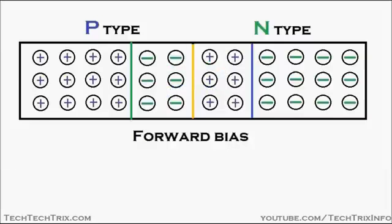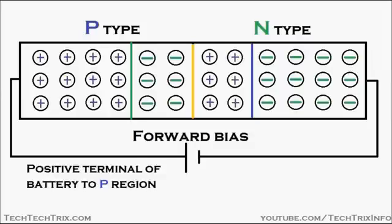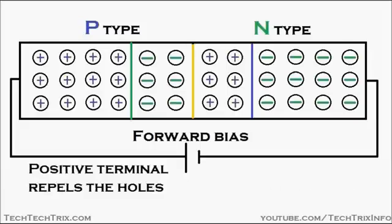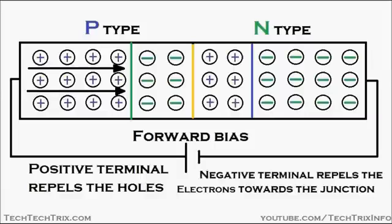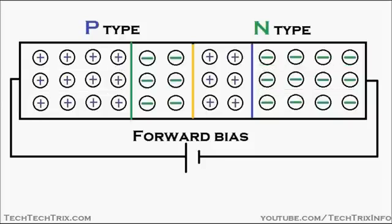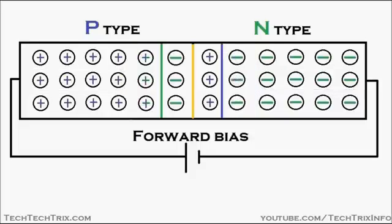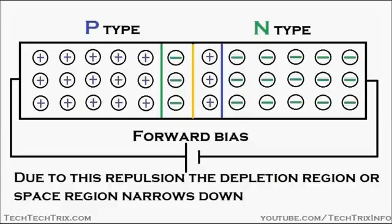Now let's see forward bias. In forward biasing, the positive terminal of the battery is connected towards the P region of the PN junction and the negative terminal is connected to the N region. The positive terminal repels the holes in the P region and the negative terminal repels the electrons towards the junction in the N region. This pressure towards the junction causes the depletion region or space charge region to narrow down, as you can see in the animation.